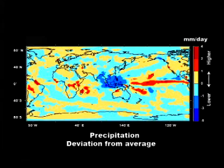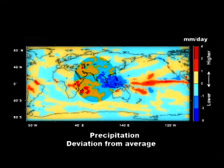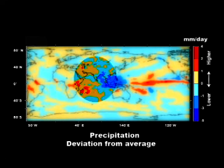During El Niño, with the atmospheric convection over the western Pacific being suppressed and the band of high rainfall shifting eastward, there is a tendency for rainfall over India also to decrease.